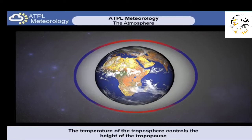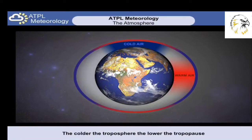What controls the height of the tropopause is the general temperature of the troposphere. As a general rule, the colder the troposphere, the lower the tropopause, and vice versa. The extremes of this are demonstrated very well over the poles and the equator.